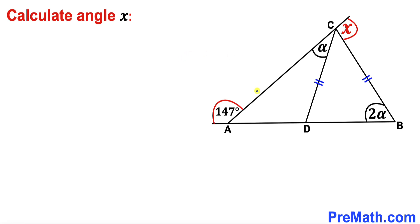In this video we have got triangle ABC as you can see in this diagram, such that this angle is 147 degrees, and moreover this angle is twice as this angle. Now we are going to calculate this angle x.